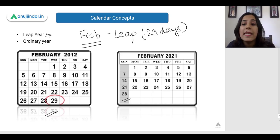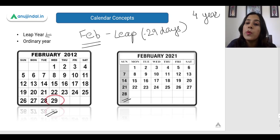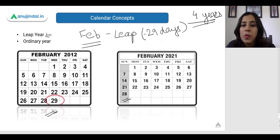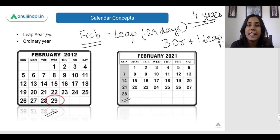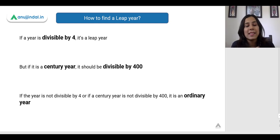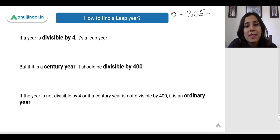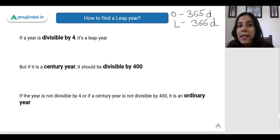A leap year comes once in every 4 years. So you have 3 years which are ordinary and then you have 1 leap year. The current year, which is 2020, is a leap year because in this year February had 29 days and not 28 days. In an ordinary year there are 365 days but in a leap year there are 366 days because of the additional 1 day in the month of February.